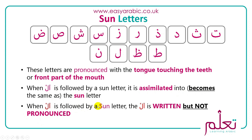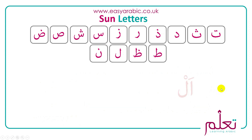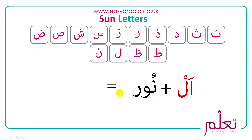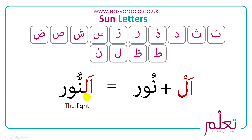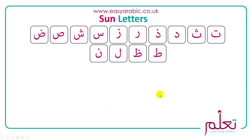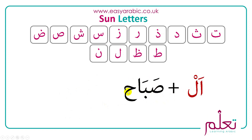When 'al' is followed by a sun letter, the lam is written but it is not pronounced. For example: al plus noor — noon is a sun letter — so the lam is written but not pronounced. The sukun is gone and the alif joins straight onto the noon. And remember from the shaddah lesson: the sound is doubled, so it becomes an-noor.